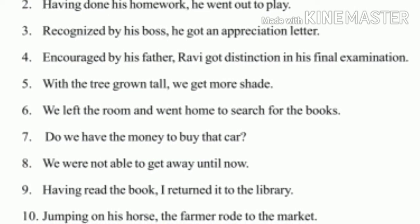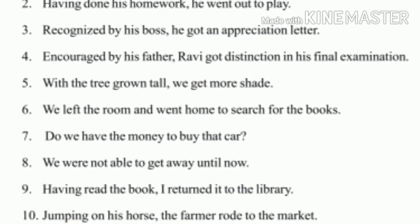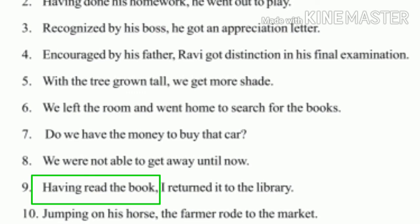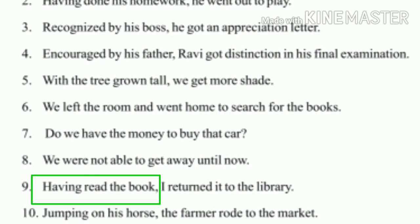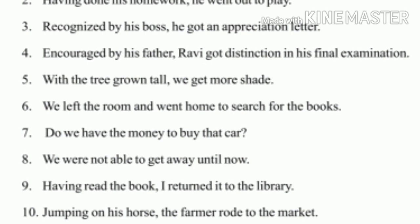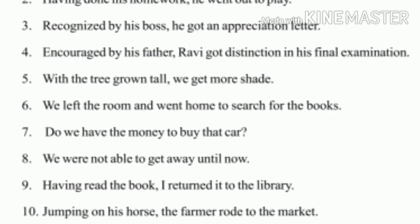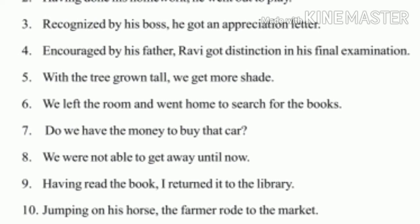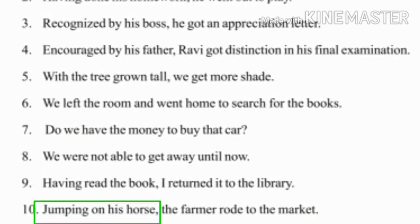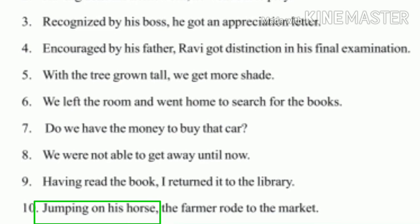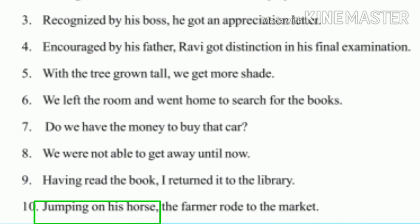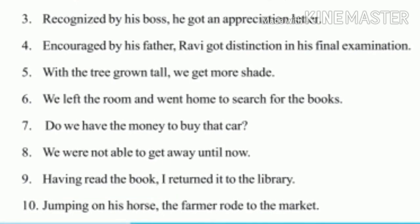Last but one: 'Having read the book, I have returned it to the library.' 'Having read the book' is the non-finite clause — it is perfect participle. Last one: 'Jumping on his horse, the farmer rode to the market.' 'Jumping on his horse' does not have any tense marker, so it is the non-finite clause.